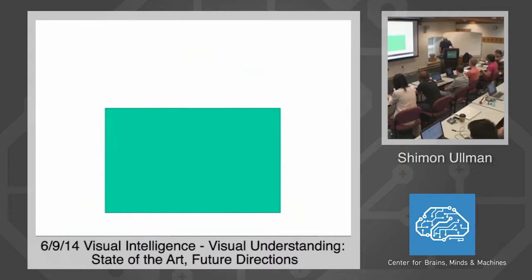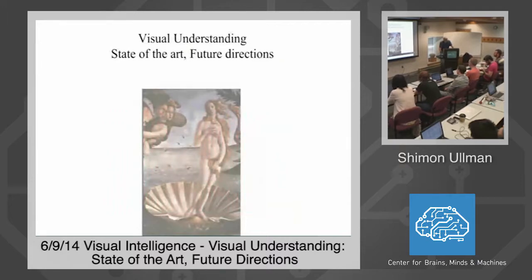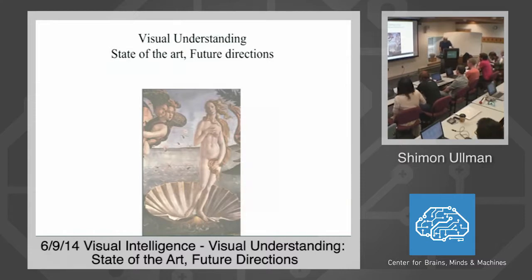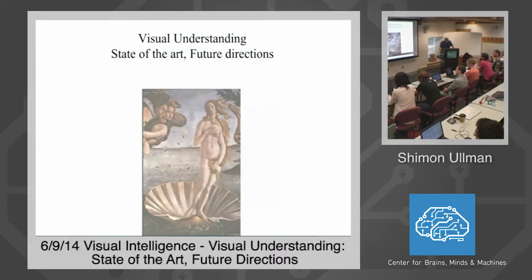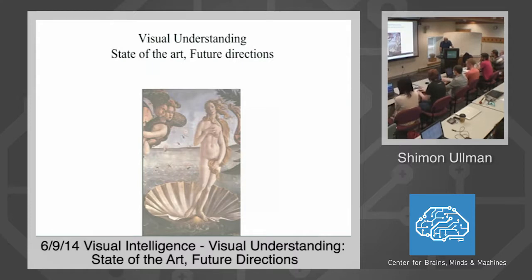Today we are going to talk primarily about vision and language as connected to vision. Within vision, the emphasis would be not on low-level image processing, but on what we call visual understanding. We try to see how to extract high-level useful information, understanding the world through images. I will describe the state of the art — what we can do today, what we understand in this area of high-level visual understanding.